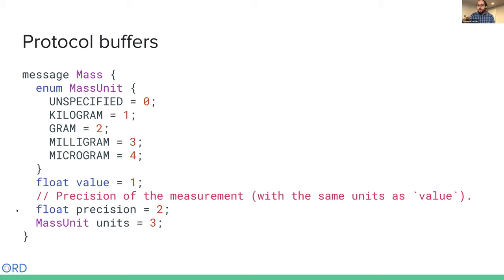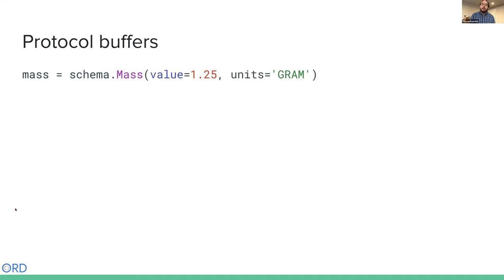Protocol buffers are nice because they're fairly lightweight relative to XML, and they have a lot of really nice downstream uses because of the protocol buffer compiler, which allows you to create bindings for other languages. For example, we can compile a protocol buffer message into a literal Python class that we can then instantiate with value and units.